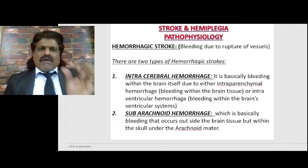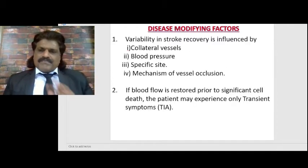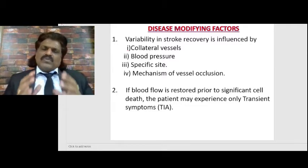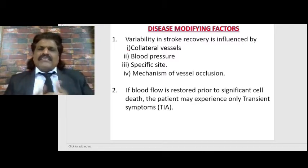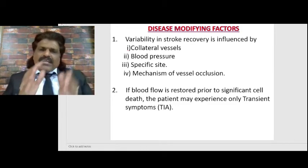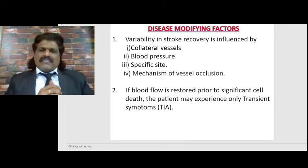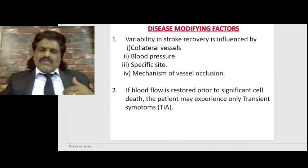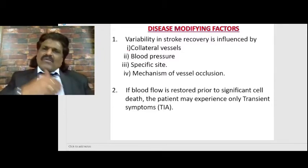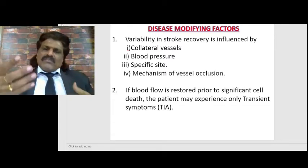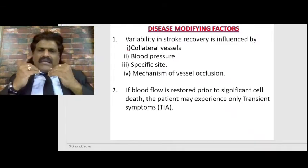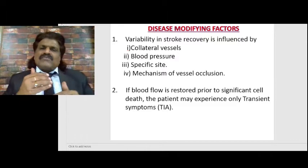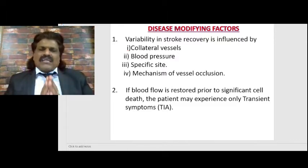Hypertension affects these particular areas because they are end arteries, resulting in Charcot aneurysms which rupture. Subarachnoid hemorrhage is bleeding that occurs outside the brain tissue but within the skull under the arachnoid - it is due to trauma or rupture of berry aneurysms. Not all persons who get stroke manifest the same severity. Variability in stroke recovery is influenced by collateral vessels: good collaterals allow compensatory blood flow and better recovery.